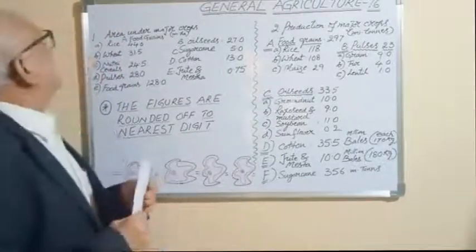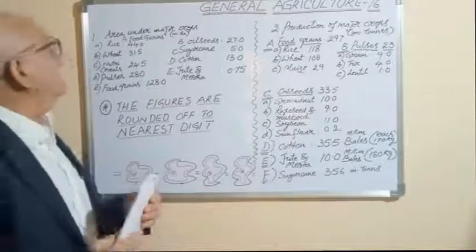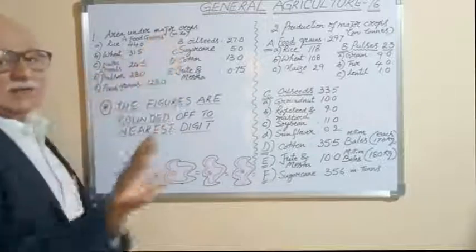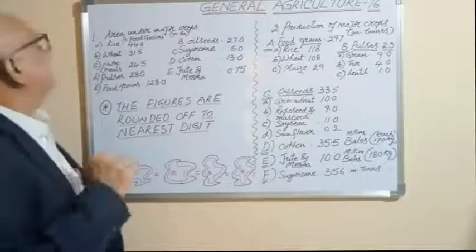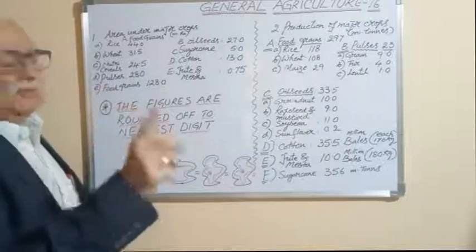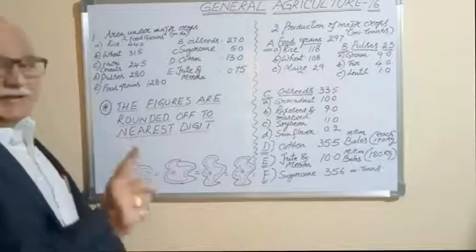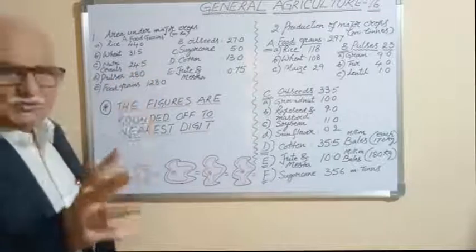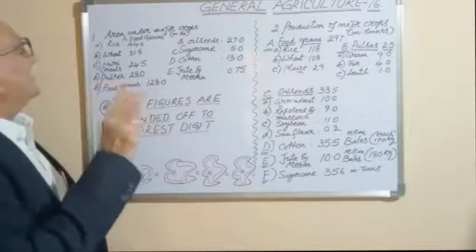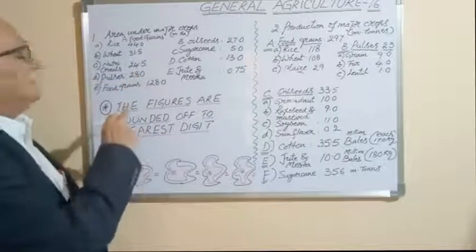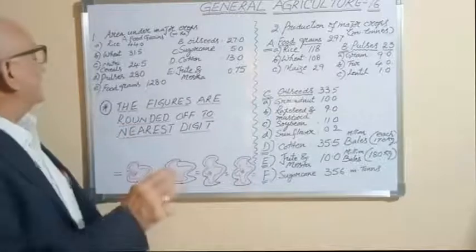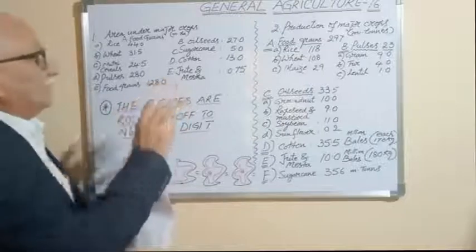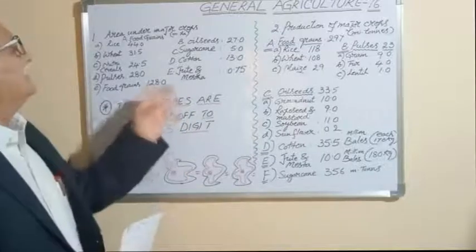As far as area under major crops is concerned, all figures are in million hectares. Rice: 44 million hectares. Wheat: 31.5 million hectares. Coarse cereals: 24.5 million hectares. Pulses: 28 million hectares. The total area under food grains altogether is 128 million hectares.